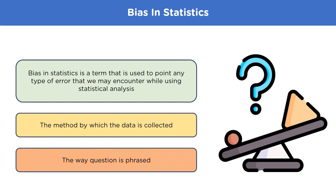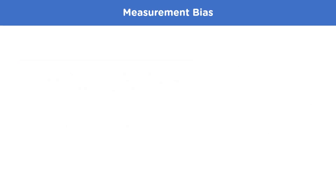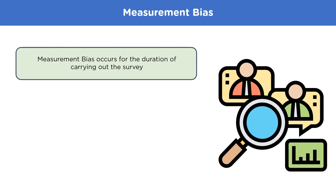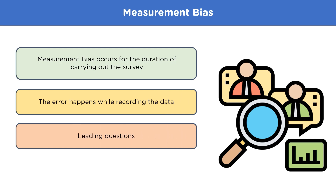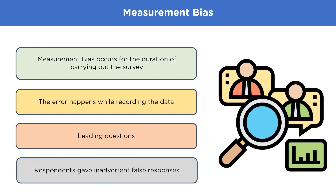The first type is measurement bias. Measurement bias refers to any systematic or non-random error that occurs in the collection of data in a study. Another term for this is detection bias. This can occur due to errors in recording data, leading questions, or respondents giving false answers. For example, in a survey about whether someone voted for President Obama, the way the question was phrased may have confused respondents, causing them to answer incorrectly — this is measurement bias.